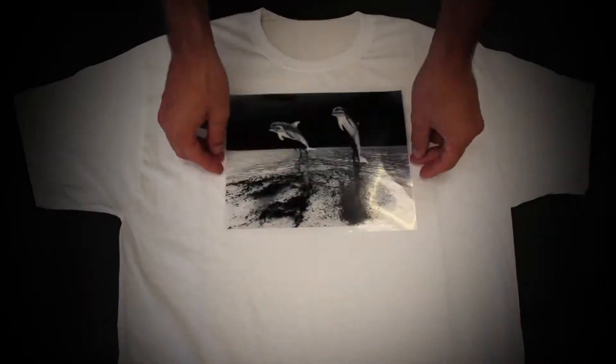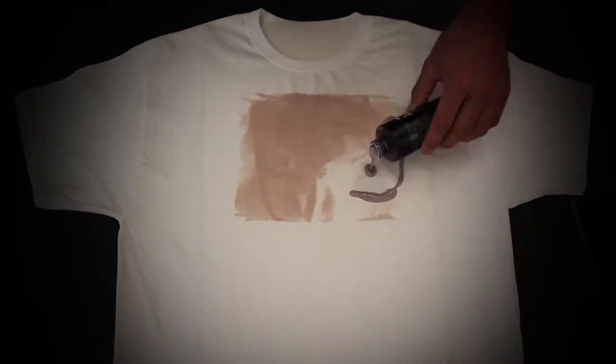Put a divider inside the shirt to prevent bleed through. Apply the dye using a brush, sponge, or brayer.